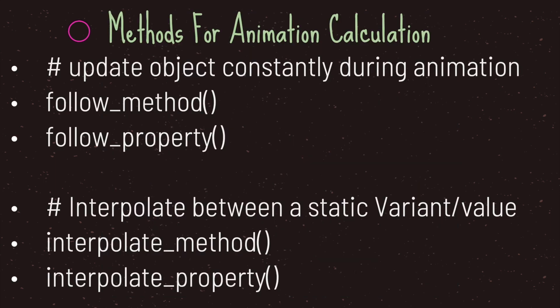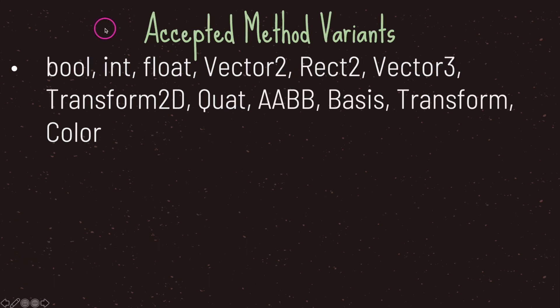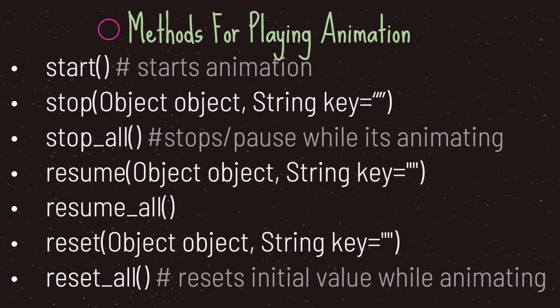Godot has many animation methods, but in this episode we'll cover four: the follow method, follow_property method, interpolate method, and interpolate_property method. When using these, argument types labeled as variants accept only specific types — boolean, integer, float, vector2, color, and others — as long as they deal with numbers. You cannot interpolate strings. You'll also need to call at least the start method to begin your tween animation.